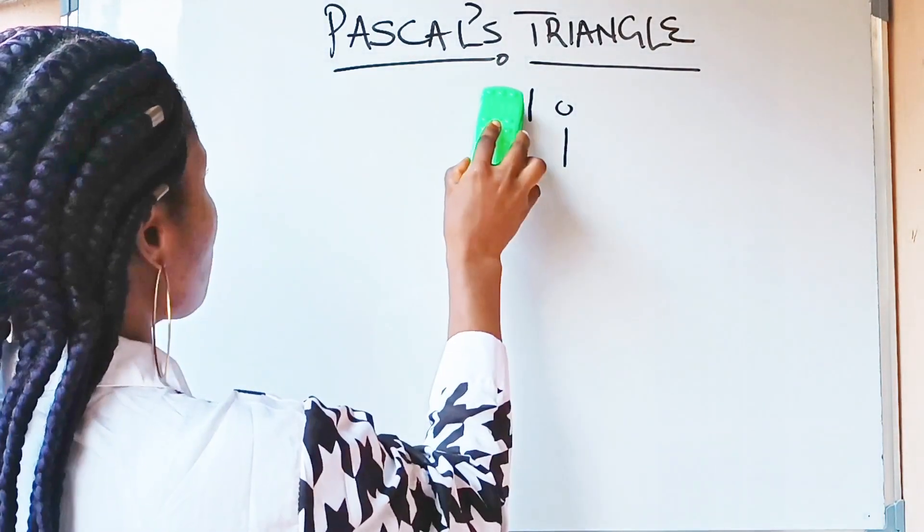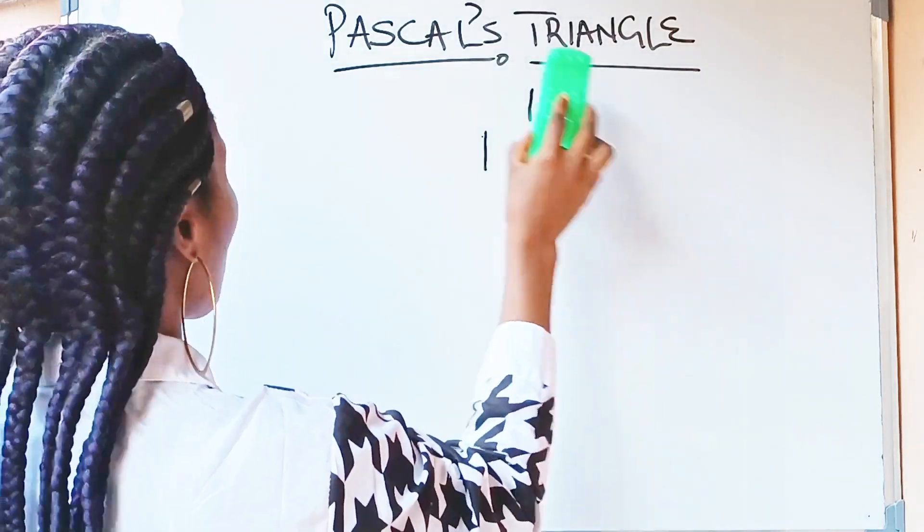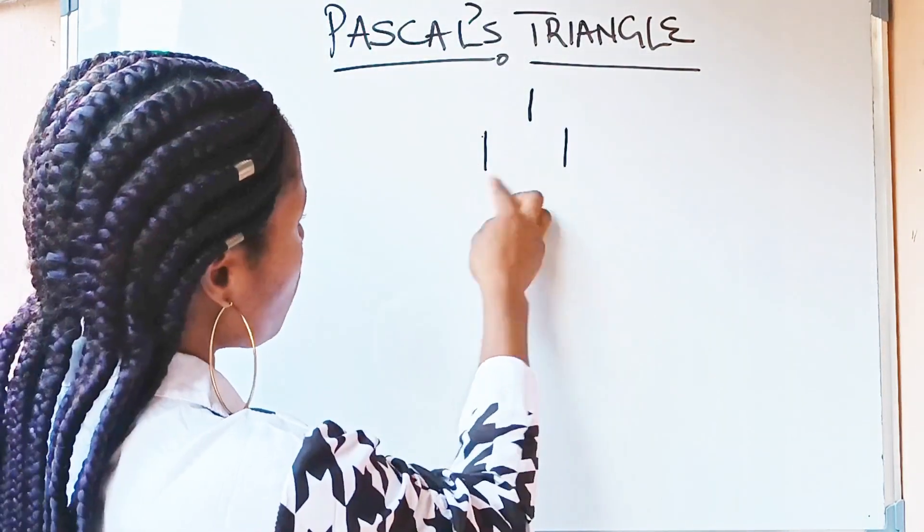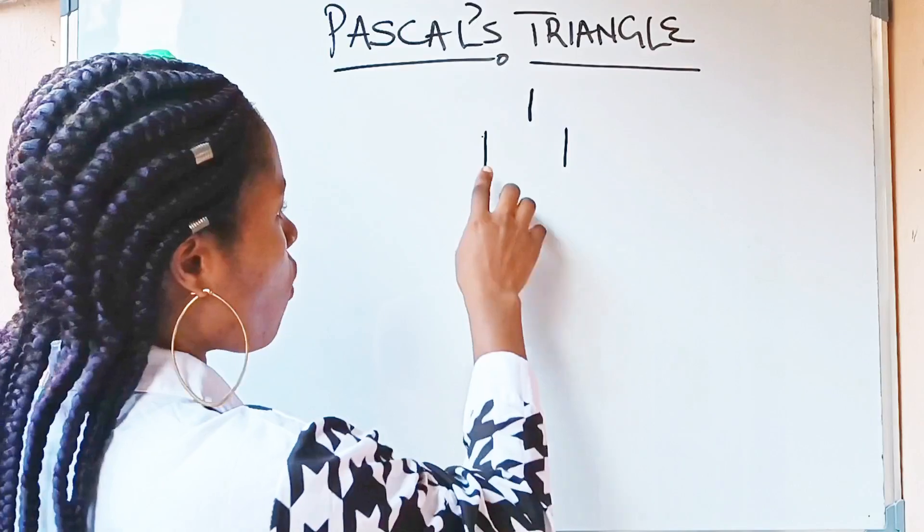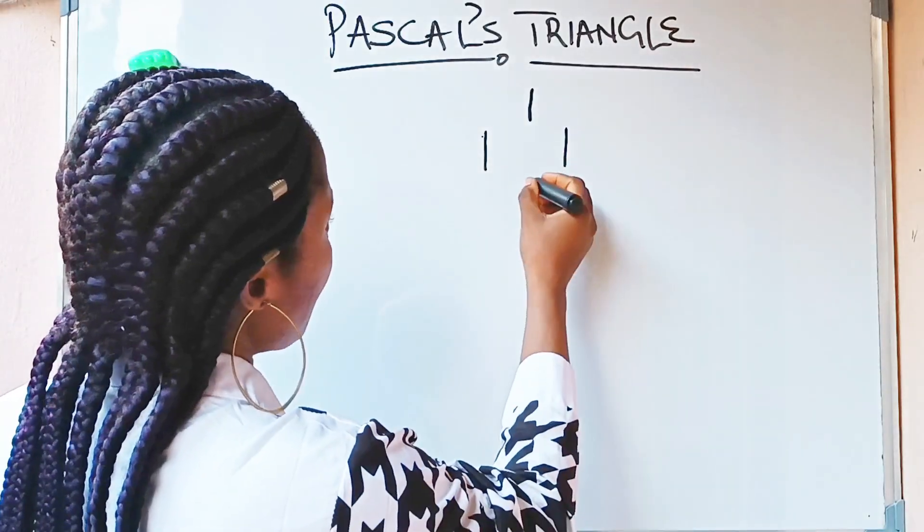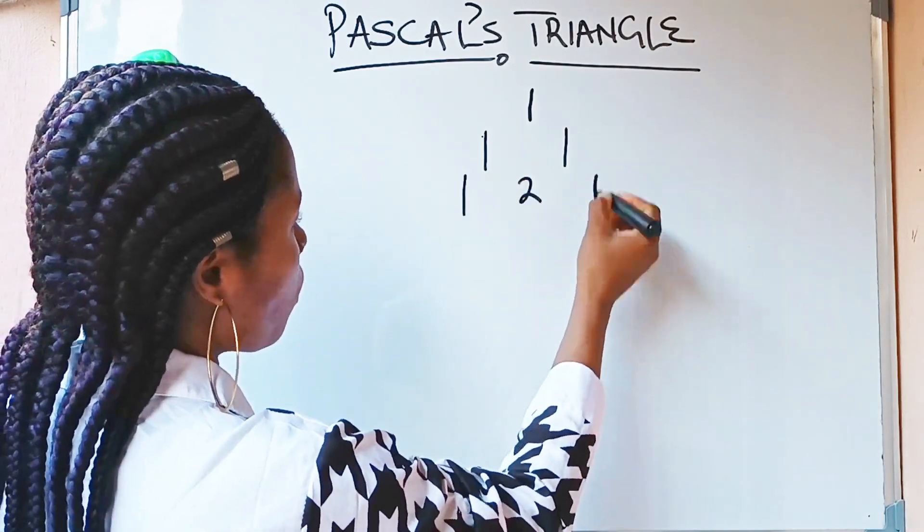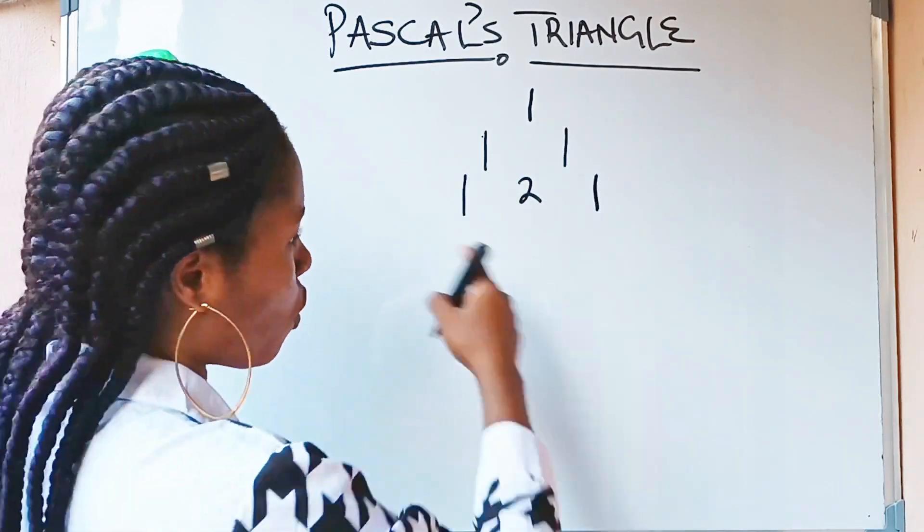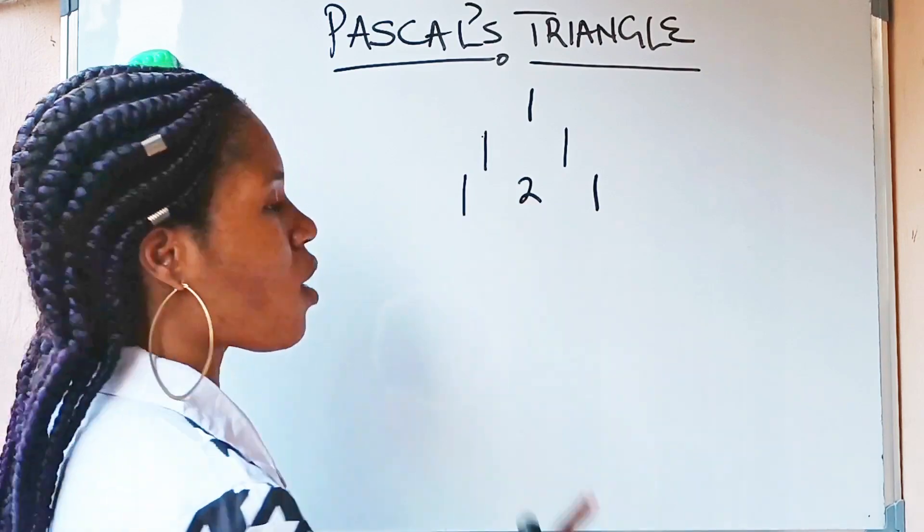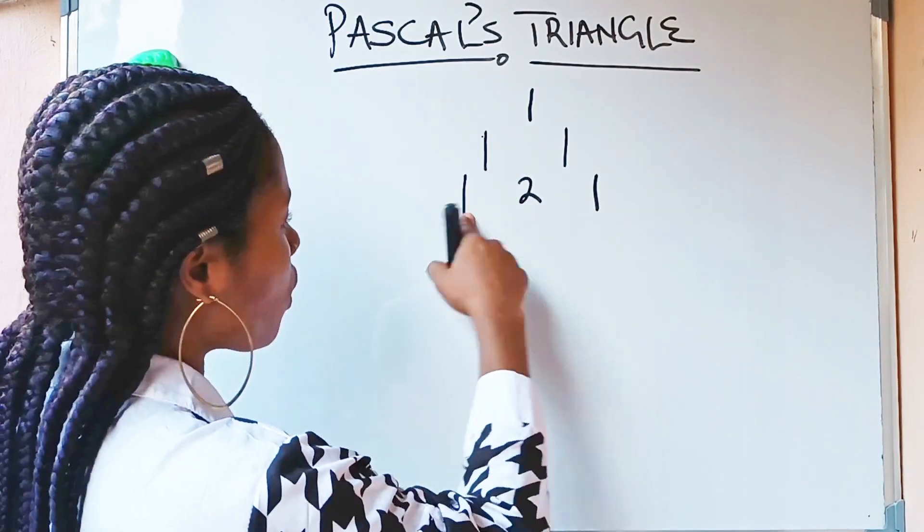Alright, having done that, we are now going to continue. With this 1 plus this 1 is 2. Write it at the middle of this 1 and 1. Then complete it with 1, 1. You will always complete each row. This is a row. You will always complete each row with 1, 1.